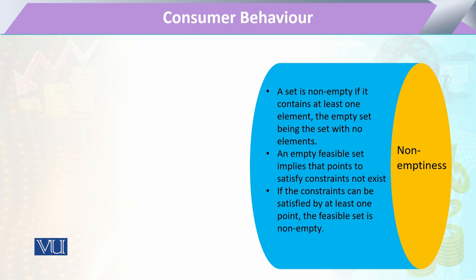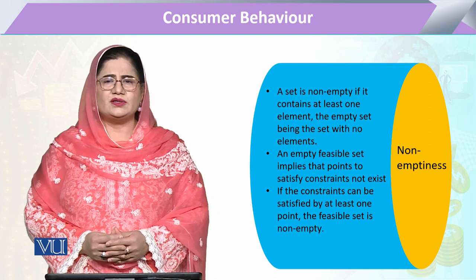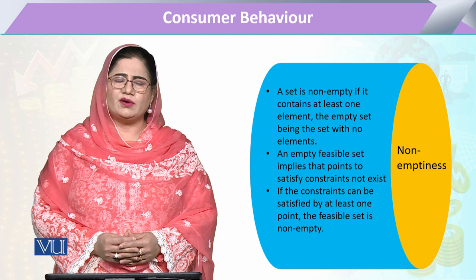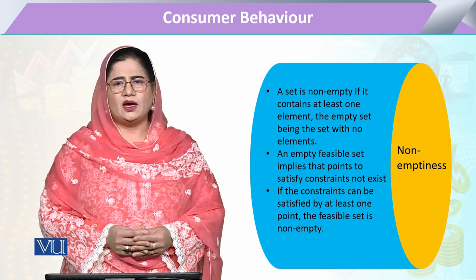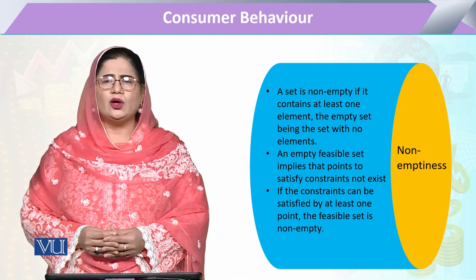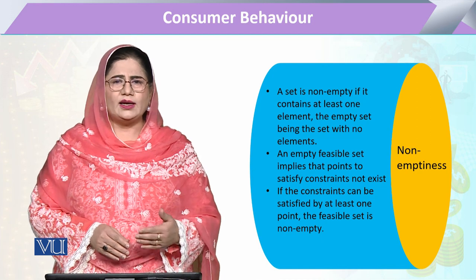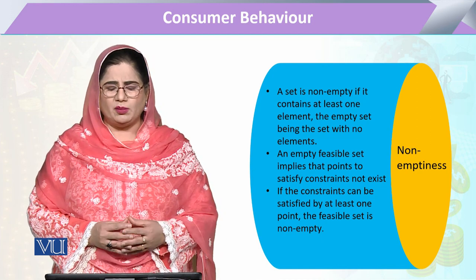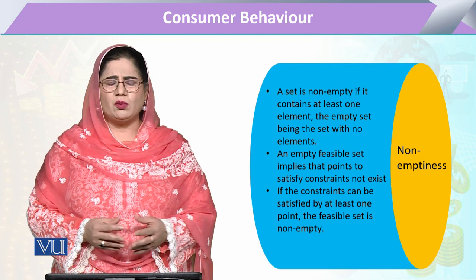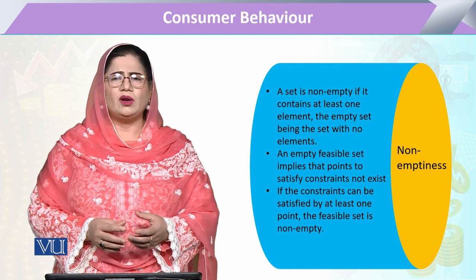Non-emptiness, as is very clear from the name, means that the feasible set should not be empty — there should be at least one element in the set. There can be more than one solution or more than one opportunity, but having even just one available element makes it non-empty.